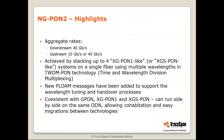Let's start with the highlights of NGPON2. The aggregate rates are: downstream 4 Gbps, upstream has two flavors — 10 or 40 Gbps. It's achieved by stacking four XGPON1-like or XGSPON-like channels on a single fiber using multiple wavelengths in the TWDM PON technology, which means time and wavelength division. There are some new flow messages — this is the main protocol difference between XGPON1/XGSPON and NGPON2 — and these messages support the wavelength tuning and handover processes. NGPON2 coexists with GPON, XGPON1, and XGSPON thanks to different wavelengths, so they can run side by side on the same optical distribution network, allowing cohabitation and easy migration between the technologies.